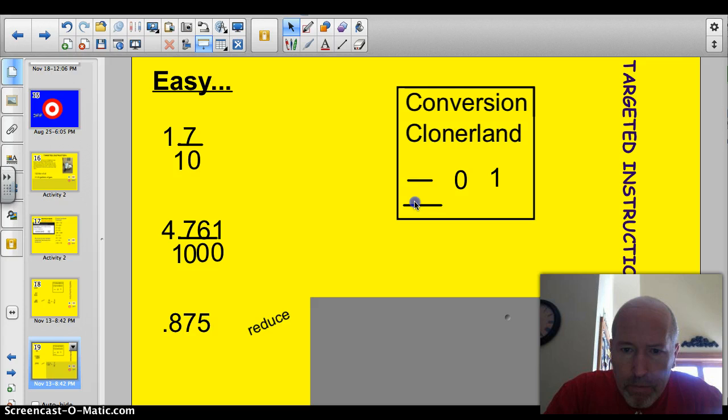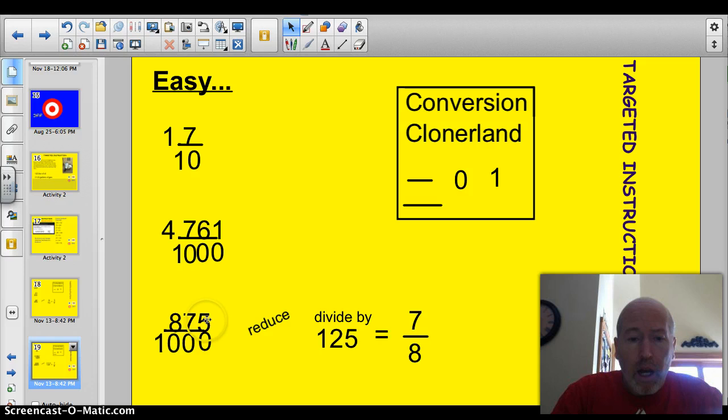This last one here, a little bit weird. Because it's going to require some reduction. We're going to put the 0s in. Again, a 0 under each digit. Put a 1 in front. 875 one-thousandths. Unfortunately, you have to reduce that one, too. If you divide each by 125, which is the greatest common factor, you'll find out that that's seven-eighths.